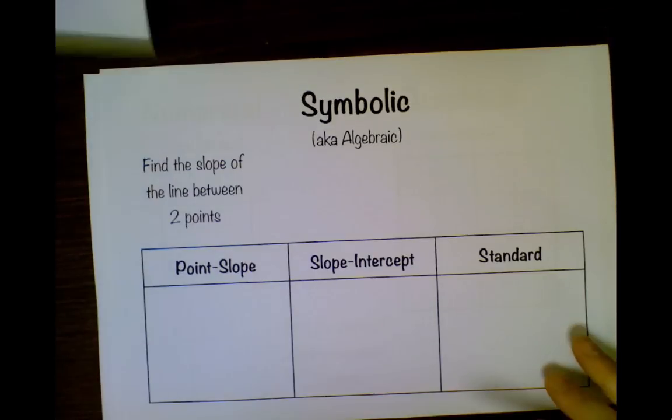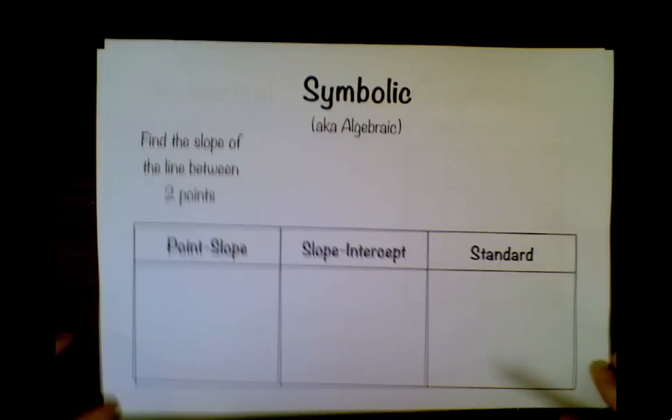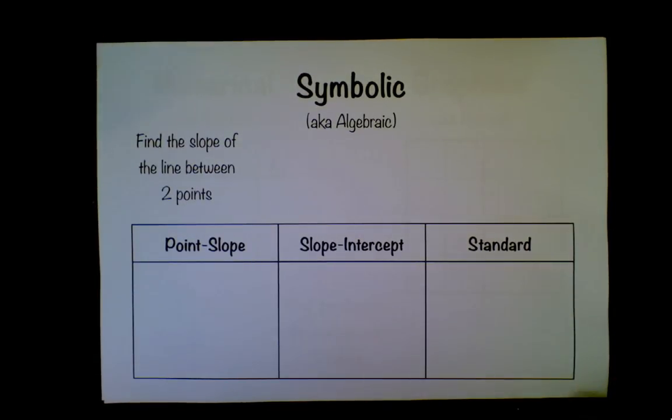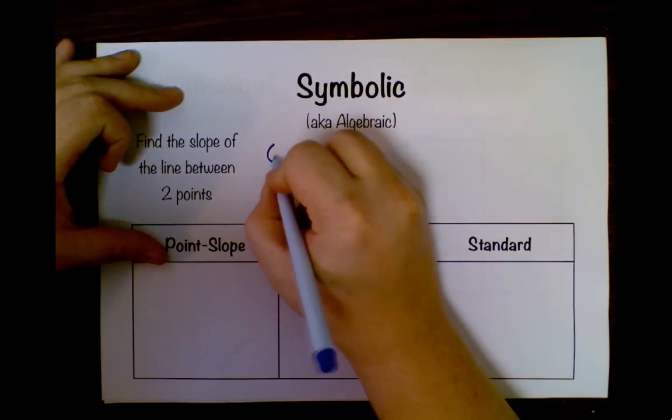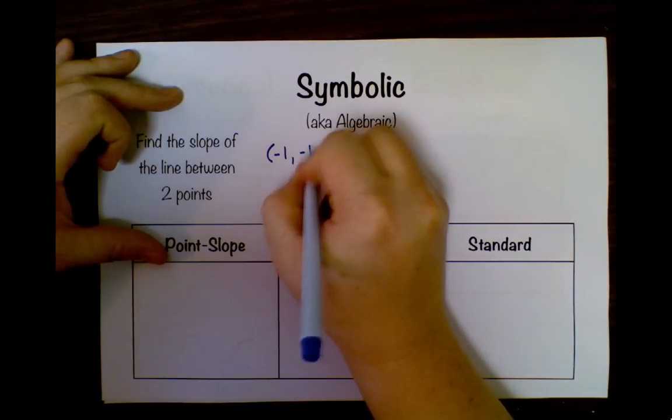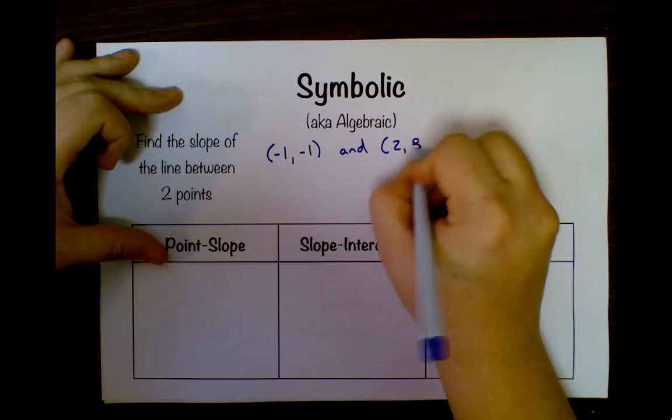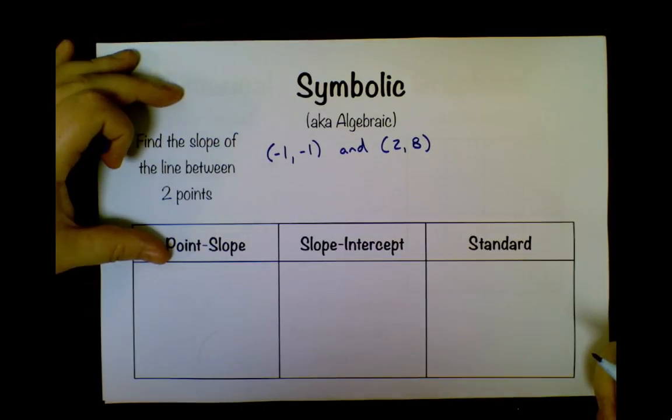Let's look at symbolic first, since we use it all the time. What I'm going to do is take the same problem and look at it in all of these ways. First of all, I'm going to start by finding the slope of the line between two points. And just for giggles, I'm going to take the point (-1, -1) and (2, 8). Sounds like a plan.